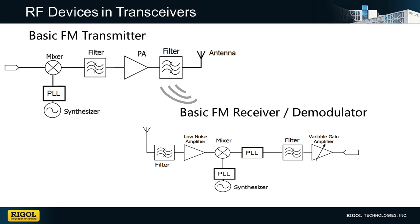Devices of interest that often need to be characterized or verified within a transceiver setup include antennas, filters, mixers, amplifiers, and phase-lock loops. Many of these components are best characterized using a spectrum analyzer with a tracking generator.